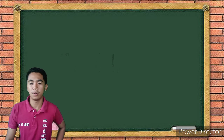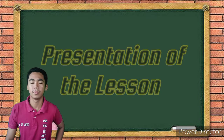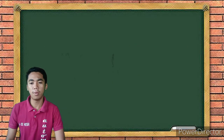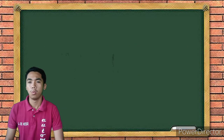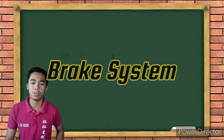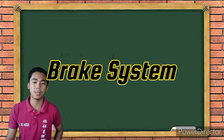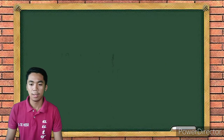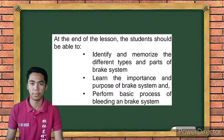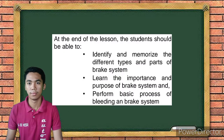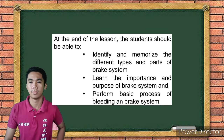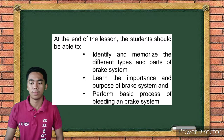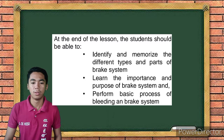Now let's proceed to the presentation of the lesson. Class, those words in the jumbled letters are related to our topic, which is the brake system. For us to be properly directed in discussing our topic, let us first read the objective of the lesson. At the end of the lesson, the students should be able to identify and memorize the different types and parts of brake system, learn the importance and purpose of brake system, and perform the basic process of bleeding the brake system.